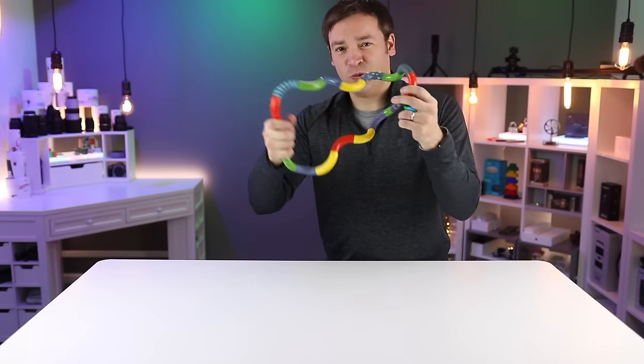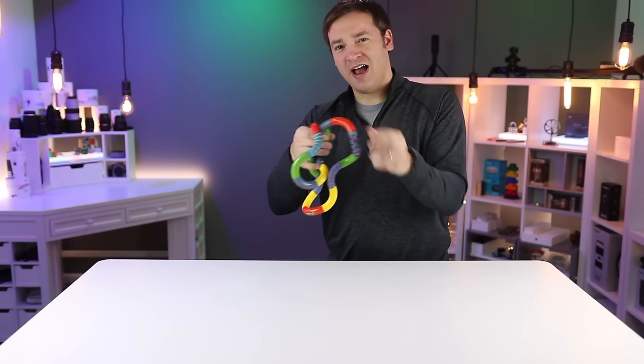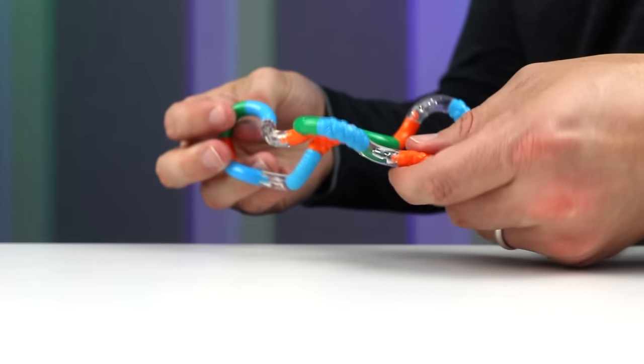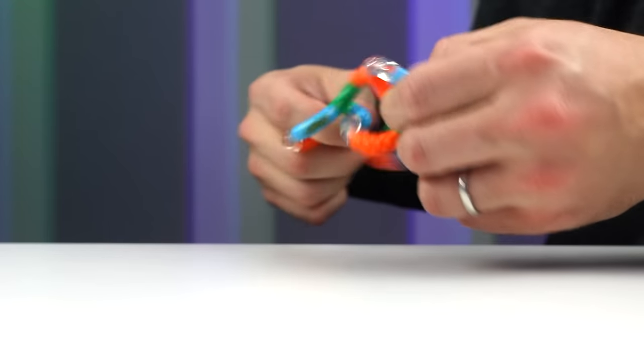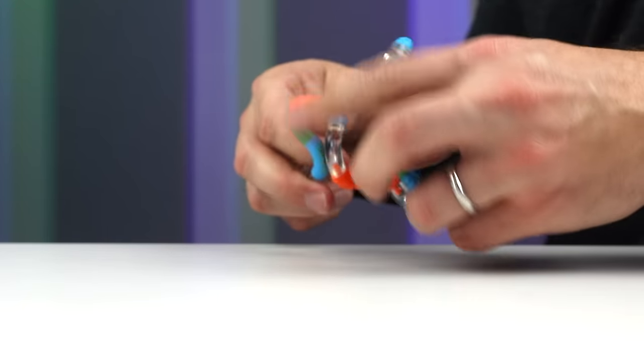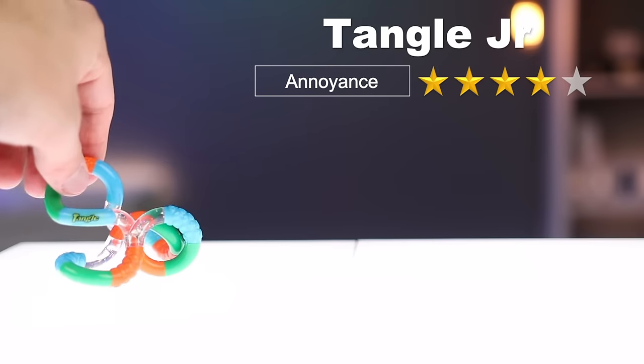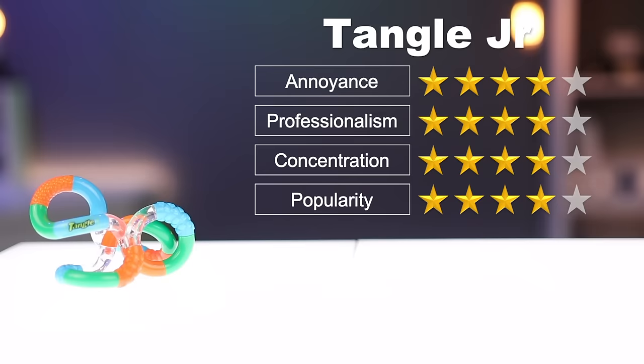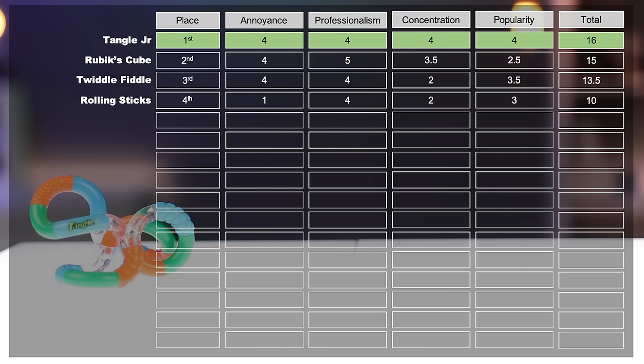The Tangle's been around for a little while now, but the junior size is more suited for the office. It comes in different colors and textures and doesn't make a lot of sound. You can make shapes and different things with it. And because of that it gets four for annoyance, four for professionalism, four for concentration and four stars for popularity. Four's across the board puts it squarely in first place.